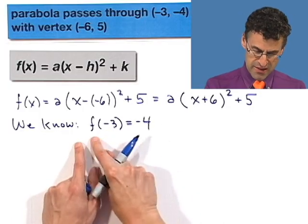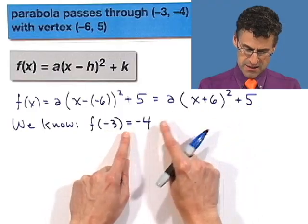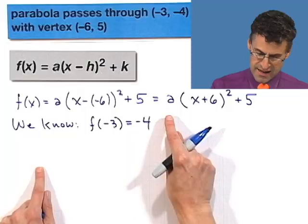If x equals negative 3, the answer is going to be negative 4. If I plug in negative 3 for x and I know that the answer is going to equal negative 4, I can now solve for a. Check it out. I'm going to do it right now.